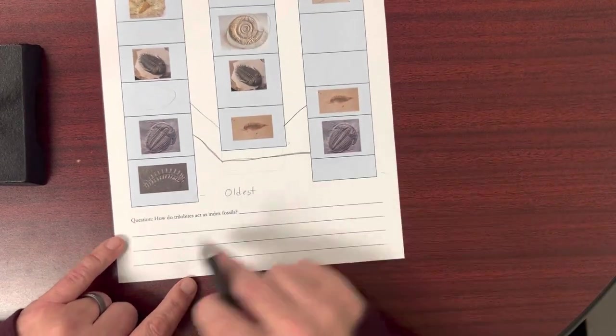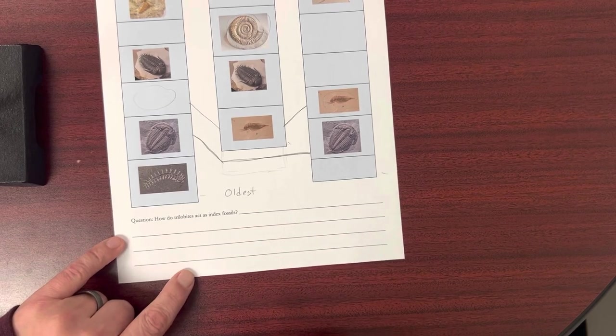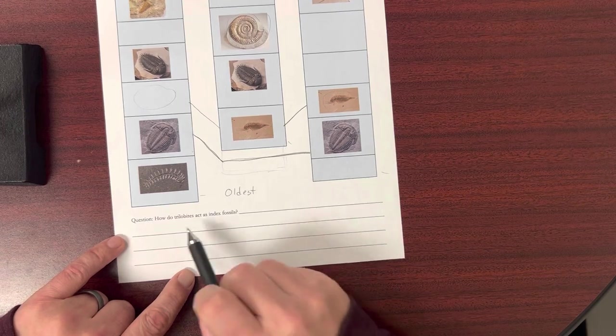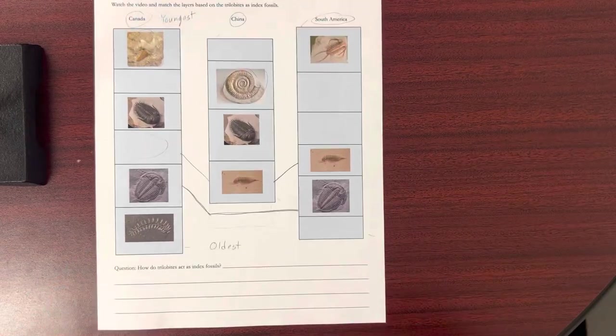Okay? That's it. So connect those up, and then answer the question: how do trilobites act as index fossils? And that's some of the stuff that I just talked about earlier. Or of course, you could look that up. All right, thank you very much.